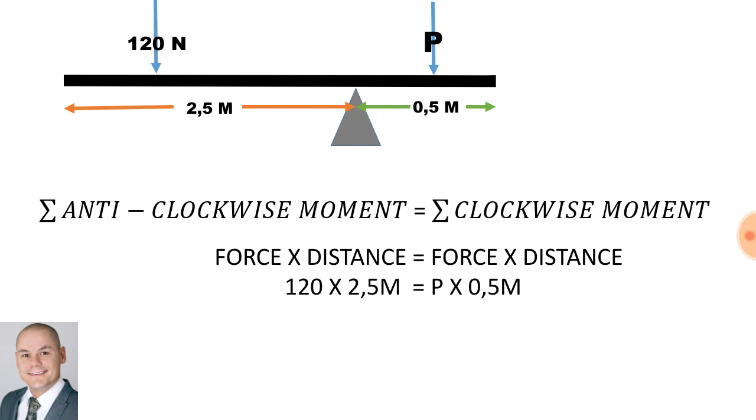Therefore, in order to calculate the moment, it will be the force multiplied by the distance. However, we have an unknown force, which is known as P. So, for the anti-clockwise moment, it will be 120 newtons multiplied by 2.5 meters.